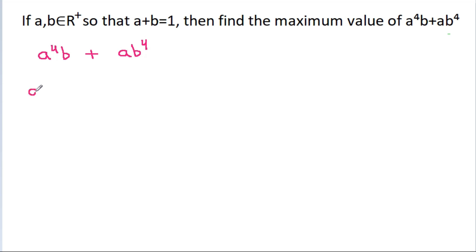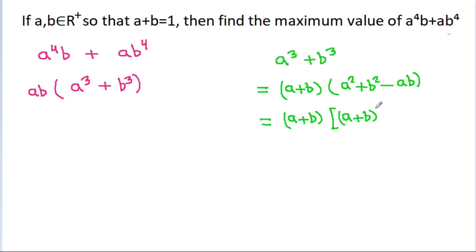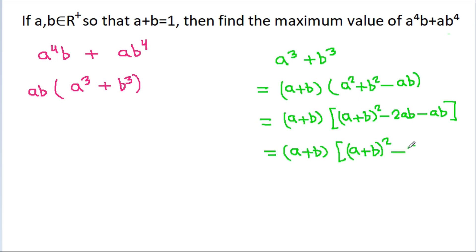We can take ab common, and we get a cubed plus b cubed. Now, a cubed plus b cubed equals (a+b) times (a² + b² - ab), and a² + b² equals (a+b)² minus 2ab. So this becomes (a+b) times [(a+b)² minus 3ab].